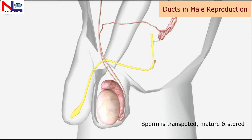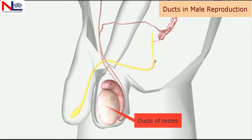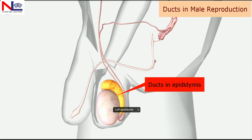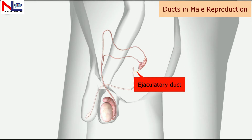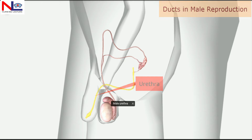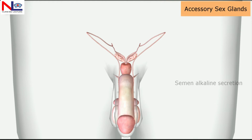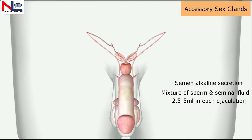Through this animation we have seen the various ducts through which sperm is transported, matured, and stored for several months. These are: the ducts of the testes, the ducts within the epididymis, the vas deferens, the ejaculatory ducts, and the urethra. Semen is a slightly alkaline secretion — a mixture of sperm and seminal fluid. Each ejaculation has a volume of 2.5 to 5 ml with 50 to 150 million sperm per ml.